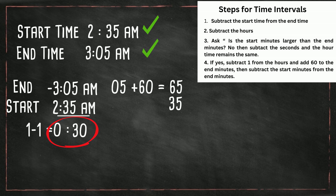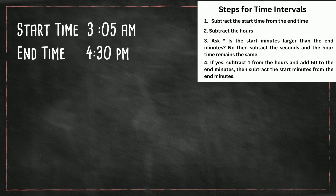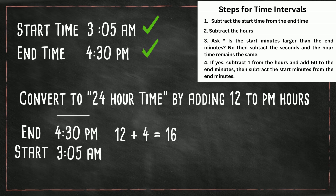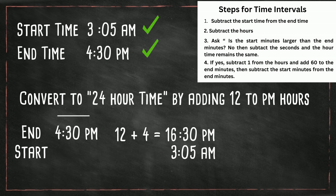And now to our bonus question. Notice that we have 3:05 a.m. as a start time, but now we have 4:30 p.m. as the end time. So we need to move from a.m. to p.m. We just need to make one slight modification: whenever we move from a.m. to p.m., convert to 24-hour time. We do that by adding 12 to the p.m. time. So 12 plus 4 is 16, and the minutes remain the same. For the a.m. time, you do not do anything. Now let's just do what we have already done.